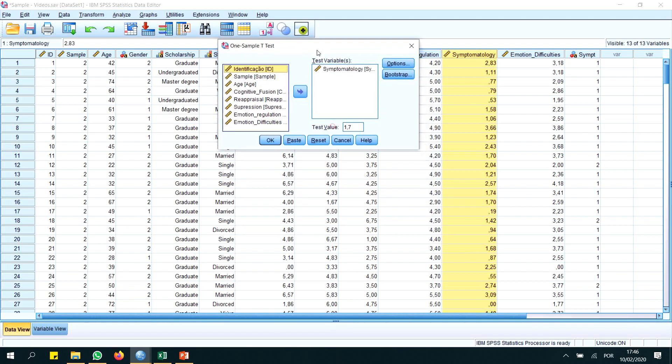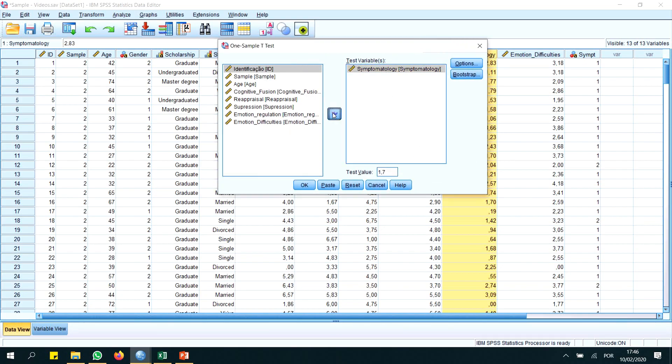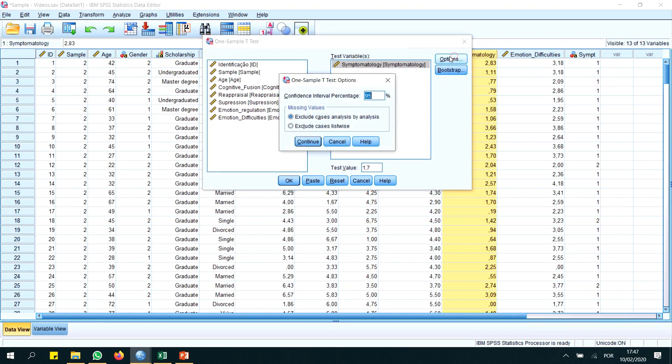I've already had selected symptomatology here, but you can just drag it along right here. I am using this value. This is an arbitrary value, just to test. And go to options. We have our confidence interval: 95%. Exclude cases analysis by analysis. We can continue. Let's do it.